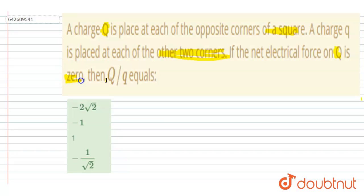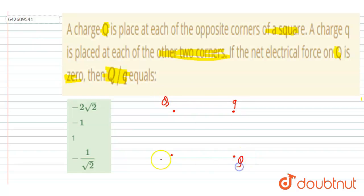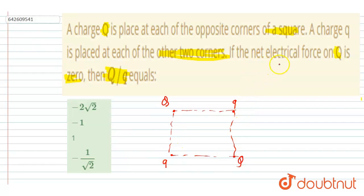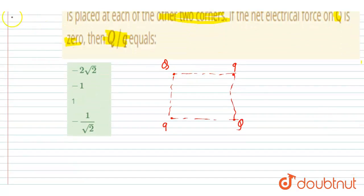If the net electric force on capital Q is zero, you have to find the Q/q ratio. In the diagram, capital Q and small q alternate at opposite and adjacent corners of the square. Since the net electric force on capital Q is zero, let's analyze the forces acting on it.